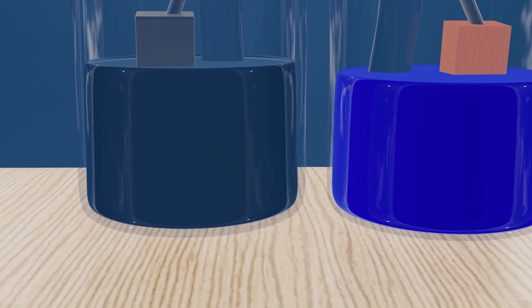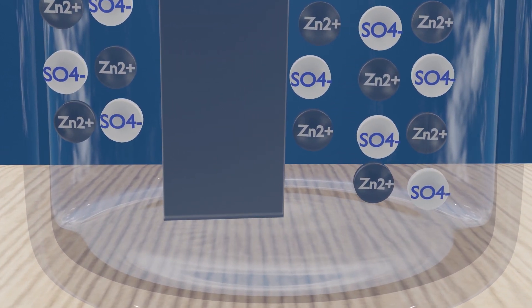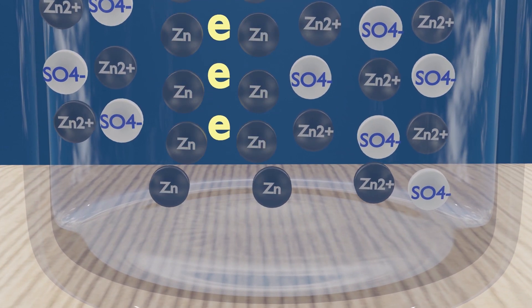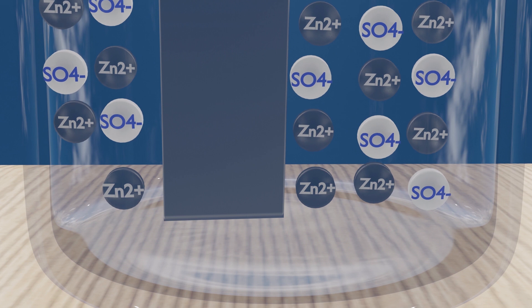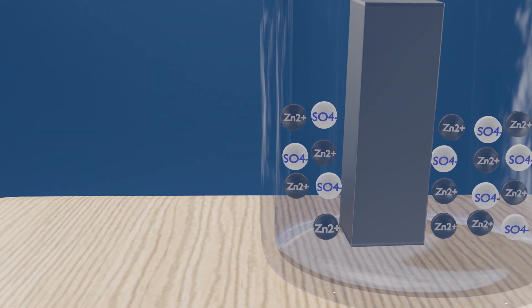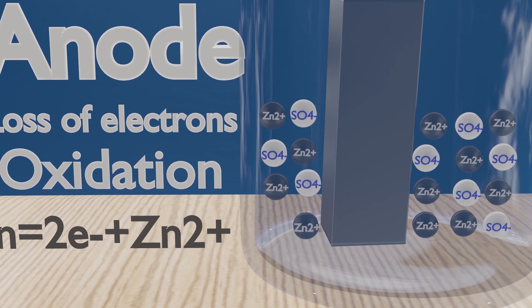Now let's see what is happening in the electrolytes. As zinc atoms lose two electrons, they become zinc 2+ ions and dissolve in the water. This is the oxidation process, and the half cell where it takes place is the anode.